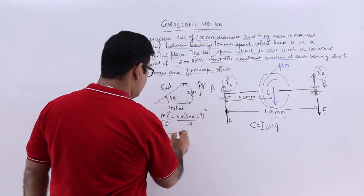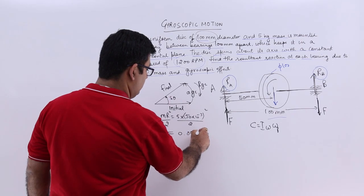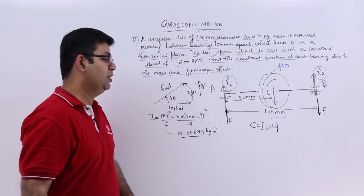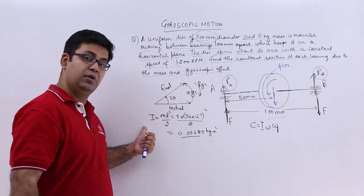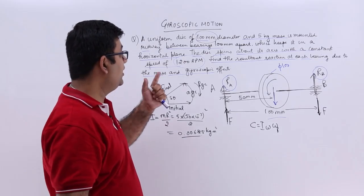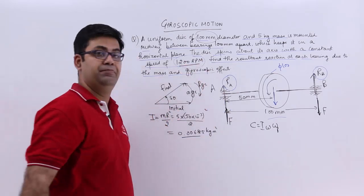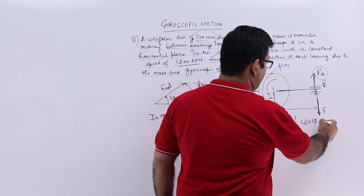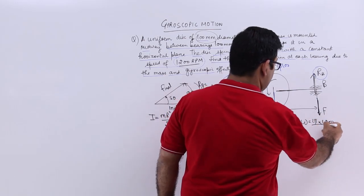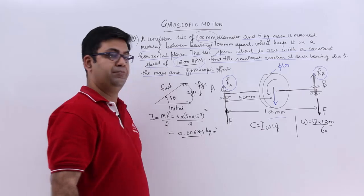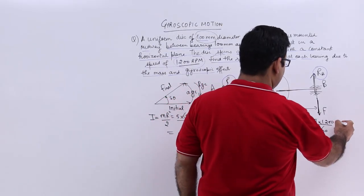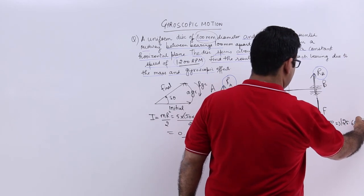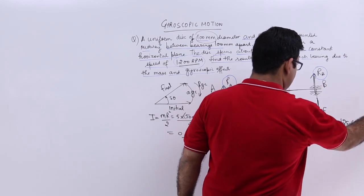Now for omega you will use 2π × N / 60. So omega is 2π × 1200 / 60. That would give you the value of omega as 125.66 radians per second.